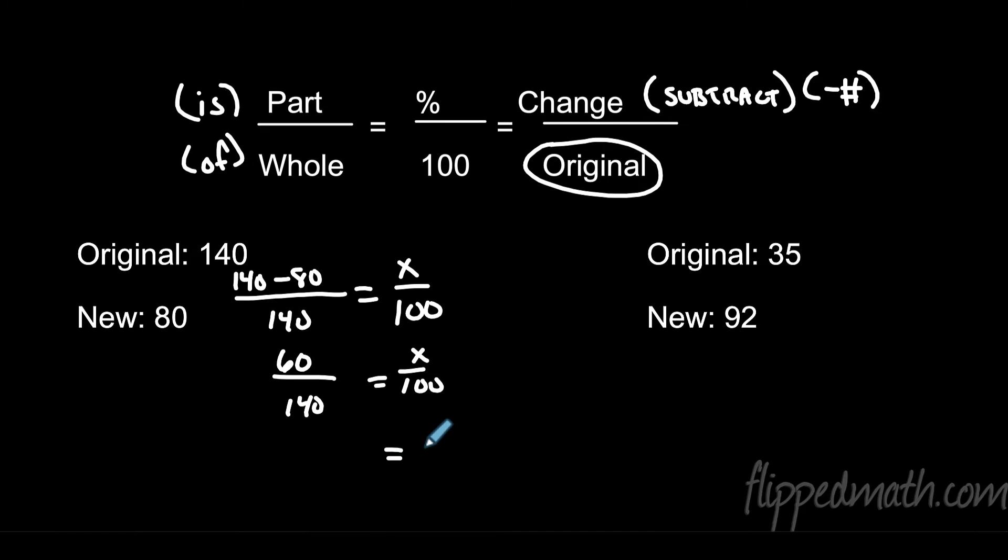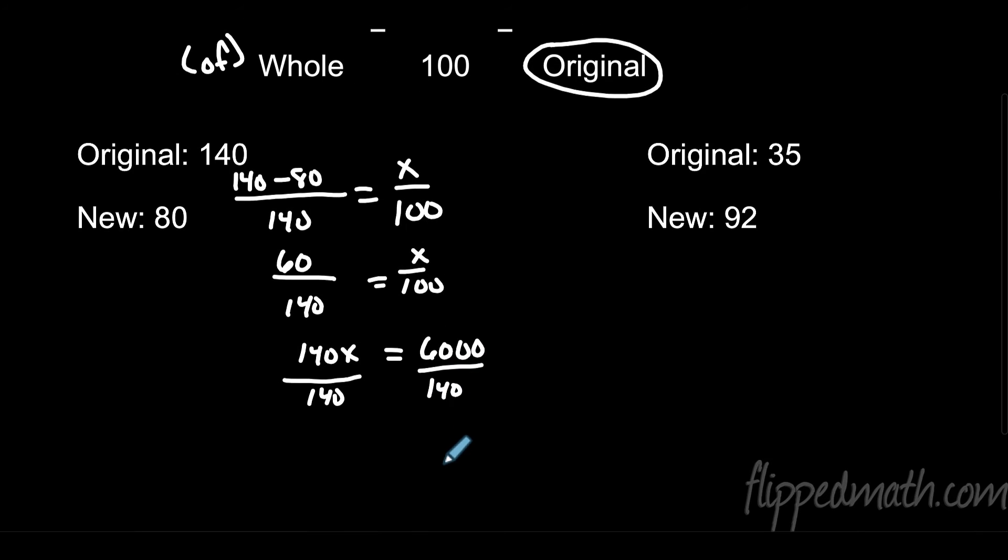So we have x over 100, 140 minus 80 is 60 over 140. We can cross multiply and we get 140x equals 6,000. And when I divide both sides by 140, let's see what is 6,000 divided by 140, it looks like x is going to be 42.9 percent. Now we also need a description here. Our original was bigger than our new, so that's a decrease.